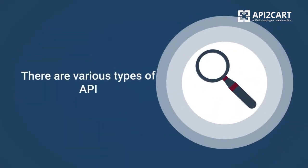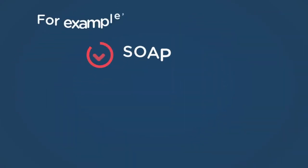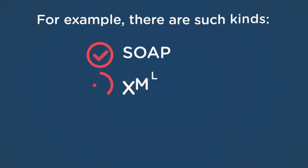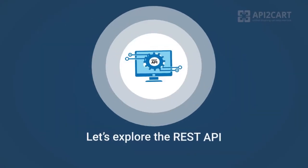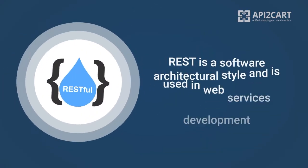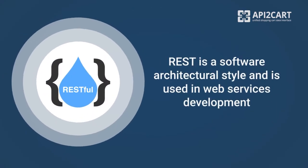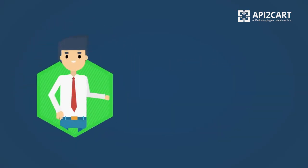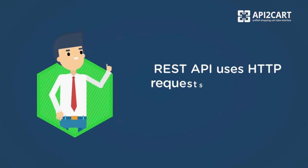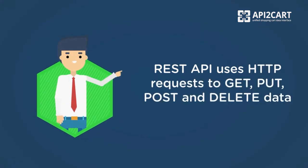There are various types of API — for example, SOAP, XML, JSON, and REST. Let's explore the REST API. REST, or Representational State Transfer, is a software architectural style and is used in web services development. REST API uses HTTP requests to GET, PUT, POST, and DELETE data.